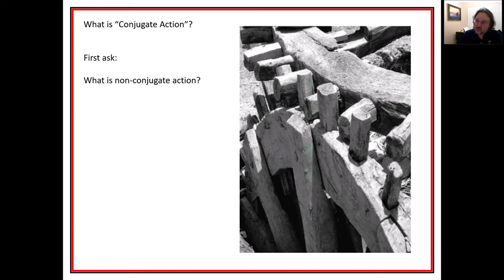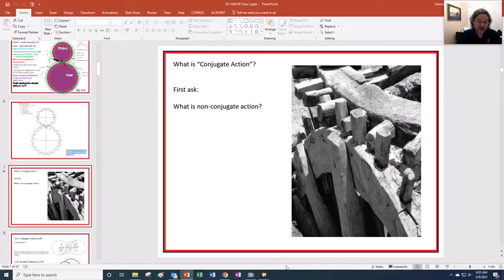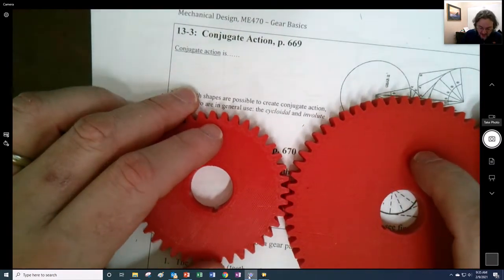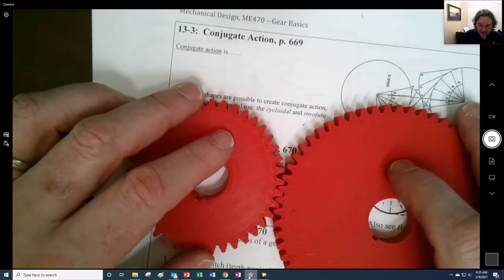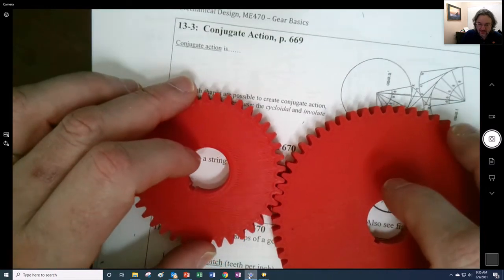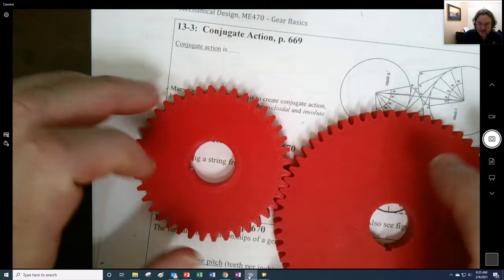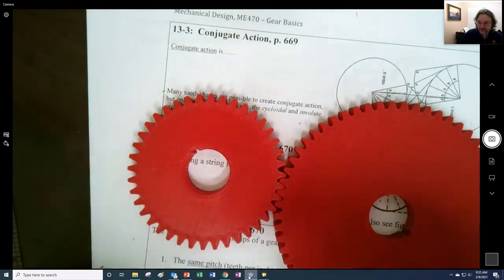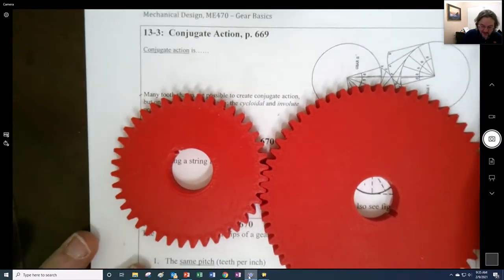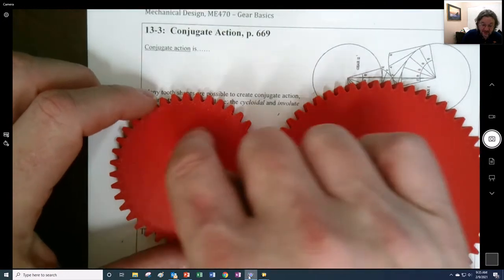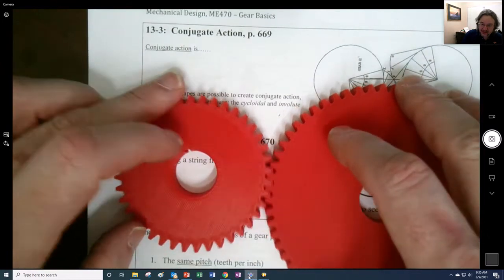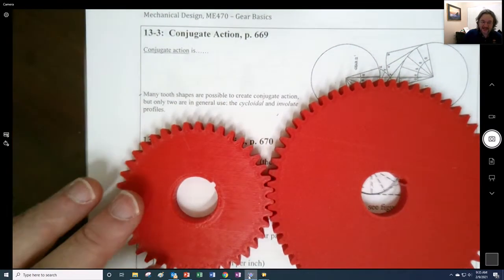So conjugate action instead is when you have nice and smooth transitions between gears. So instead of having that shaky motion, it's nice and smooth transference so that we have this really good meshing and smooth rotation. So if this thing is rotating at a constant RPM, this thing is also rotating at a constant RPM. That's conjugate action.